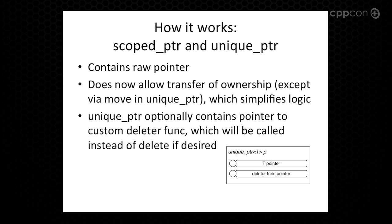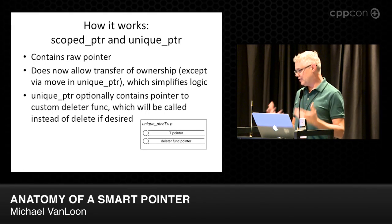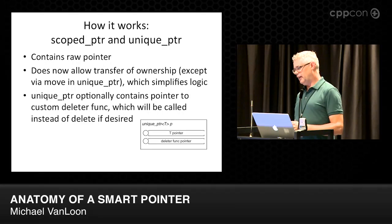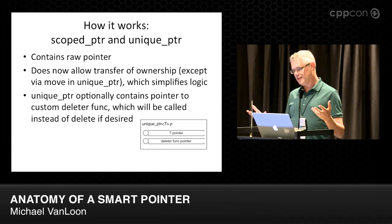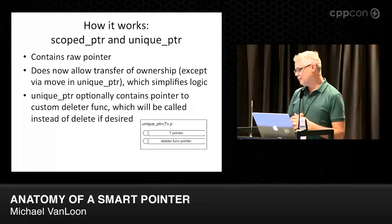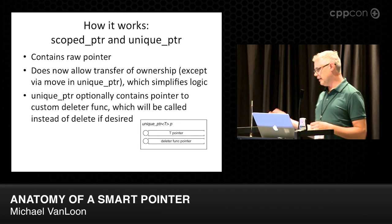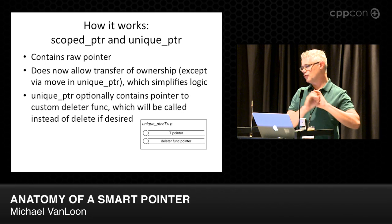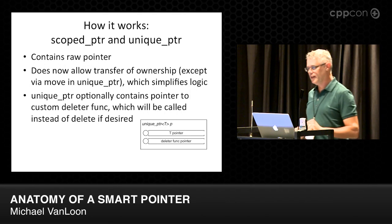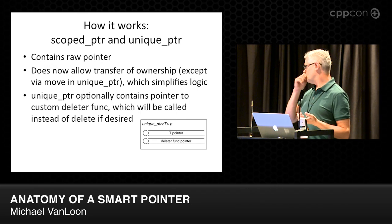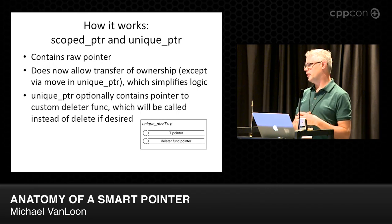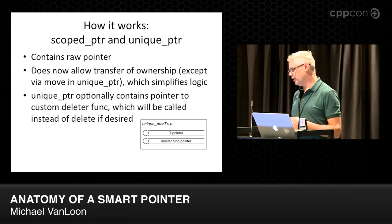Scope pointer and unique pointer: scope pointer is a Boost thing, and unique pointer is the C++11 pointer that's an improvement on scope pointer. Unique pointer does not allow transfer of ownership — that's intentional. It makes things much simpler and more efficient, and also conveys the interface semantics that it's unique. The unique pointer also has the option of a custom deleter — a function you can pass in that says, when it's time to destroy this thing, instead of calling delete, do this instead. That's a nice way to clean up resources. For example, if you're using malloc, you can use a custom deleter that calls free instead of delete.